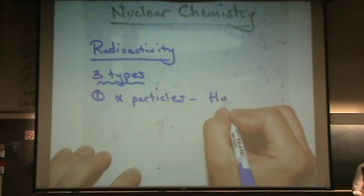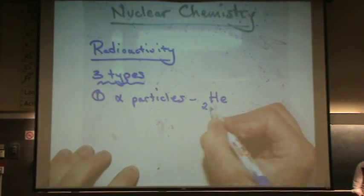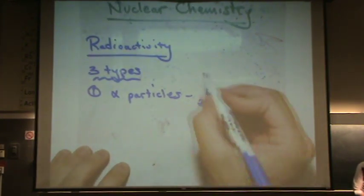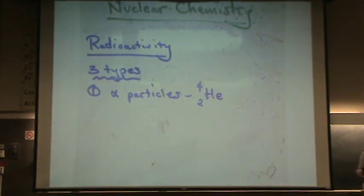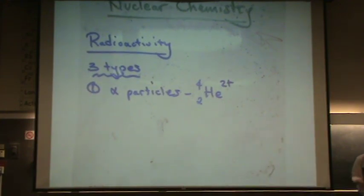So helium, which has two protons, atomic number two, and four for its overall mass number, that means two protons, two neutrons, with a two plus charge. That's an alpha particle.